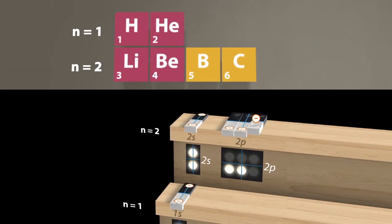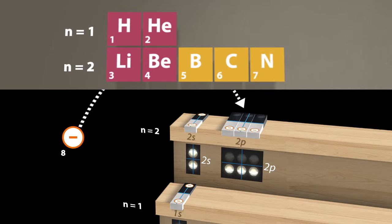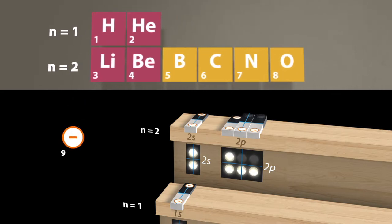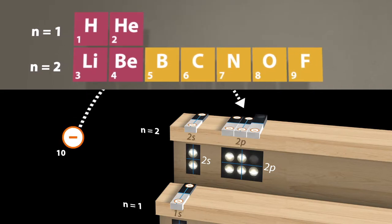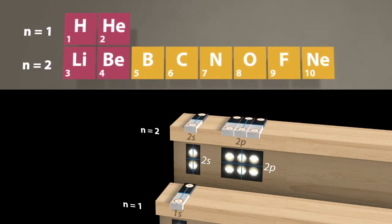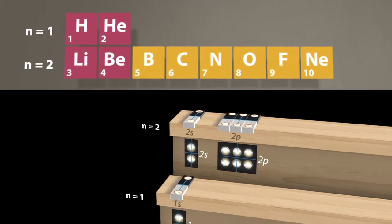With nitrogen, all p-orbitals are filled once. It is only with oxygen that a p-orbital is filled twice. The next in line is fluorine. Finally, the noble gas neon completes the second shell.